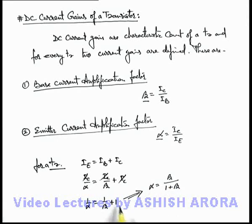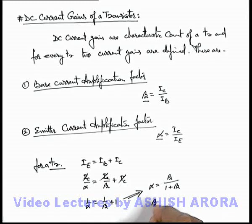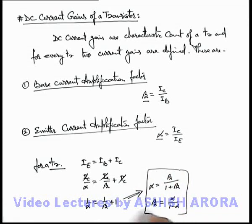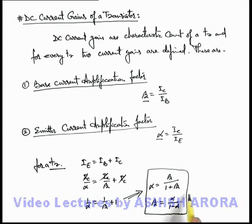You can also represent beta in terms of alpha as beta = alpha / (1 - alpha). These are the relations among the constant DC current gains of a specific transistor. This is also a quite useful relation — always keep it in mind.